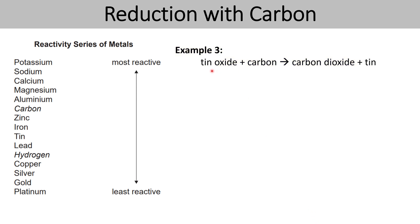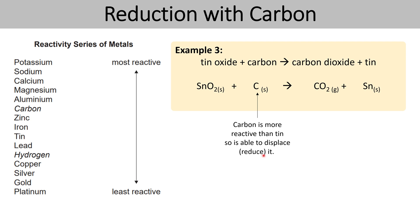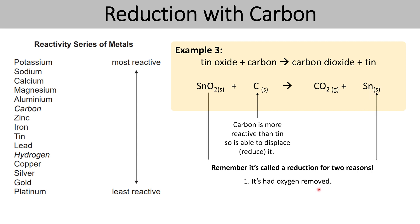Let's have a look at another example. Tin oxide plus carbon goes to make carbon dioxide plus tin. Carbon is more reactive than tin, so carbon is able to displace tin — and again it's reduction, because the tin had its oxygen removed. If we look at the charges of the ions, tin is a 4+ ion, but when it's an element it has a 0 charge, so it's gained 4 negative electrons. We could explain this using a half equation: Sn⁴⁺ + 4e⁻ → Sn.